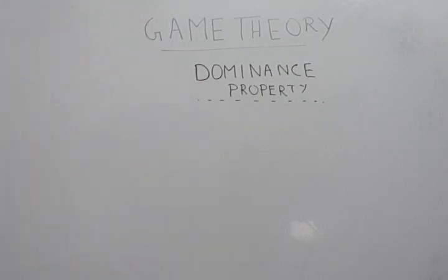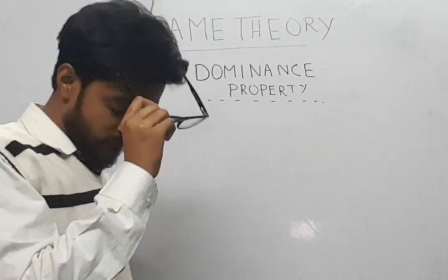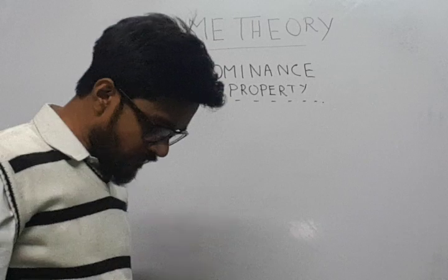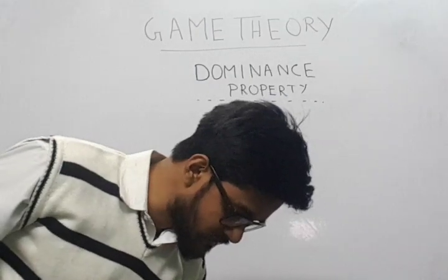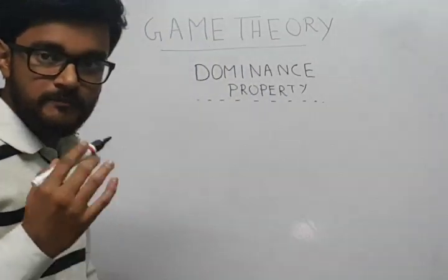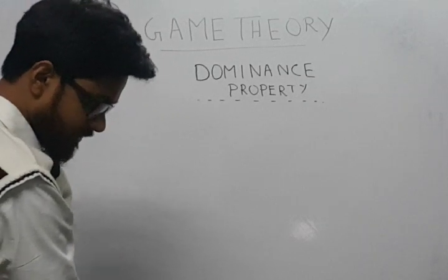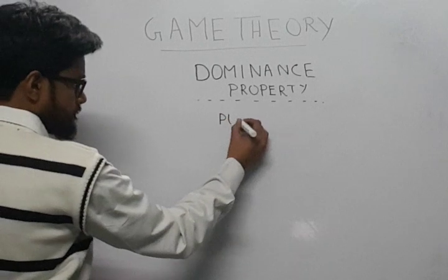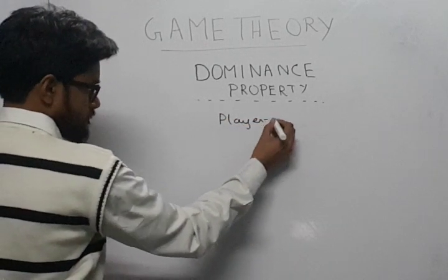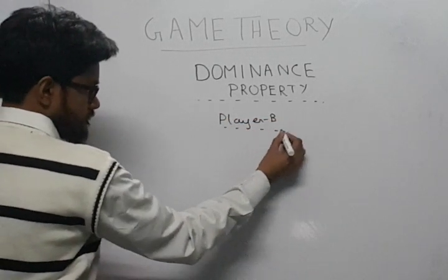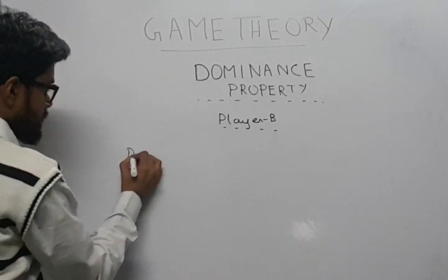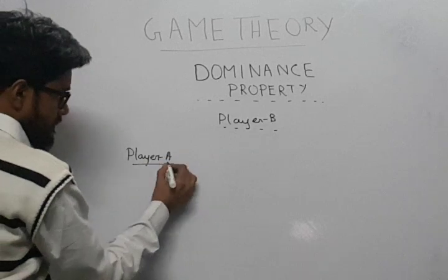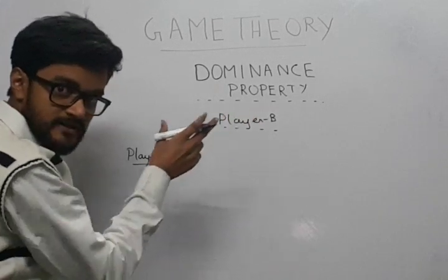So now how do we solve game theory problems with dominance property? In order to understand this, first I'll take an example of a game theory problem. So first we have to write down a payoff matrix. Suppose we have the following payoff matrix with Player B and Player A.